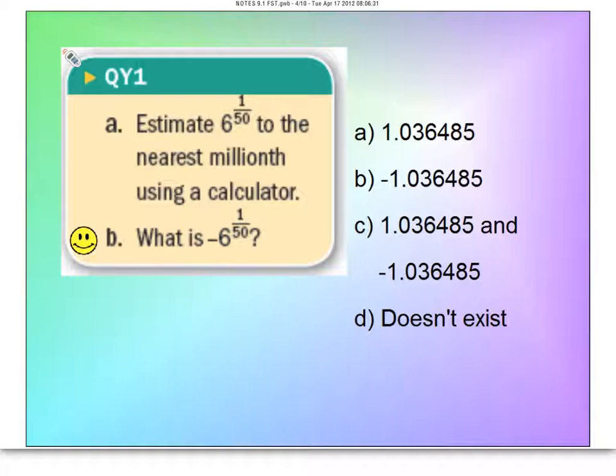So letter A here wants us to estimate 6 to the 1/50th power. By the way, this is the rational exponent. As a radical, it is the 50th root of 6.